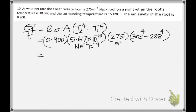Emissivity is 0.9, sigma is Stefan's constant. The area is in meters squared. The roof temperature of 30°C becomes 303 K, and the surrounding temperature of 15°C becomes 288 K. Be very careful when calculating the fourth-power terms — compute those first and write them down, then multiply the other numbers.